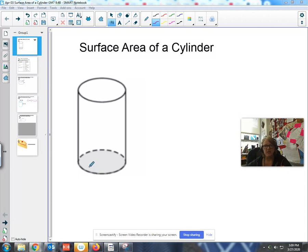This is the last thing we did just before spring break. A cylinder is a three-dimensional object and we need to calculate the area of covering the whole thing. This would be like wrapping a present and using wrapping paper.